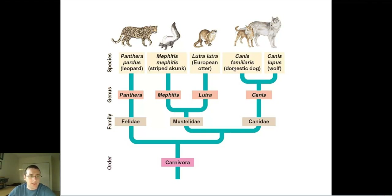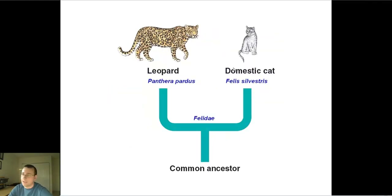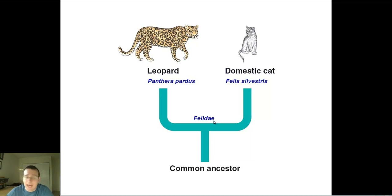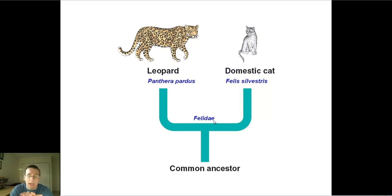The advantage of using phylogenetic trees is that they have branching points. The leopard and domestic cat, although they are in different genuses, share the family name Felidae — the feline family. The leopard is in the Panthera branch of the tree, while the domestic cat is in the Felis branch, so that's how they are in a different genus. But they must share a common ancestor since they share the Felidae family, and putting them in a tree gives you information about their relationship.